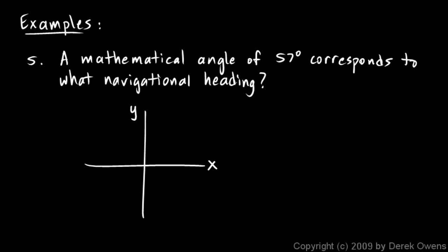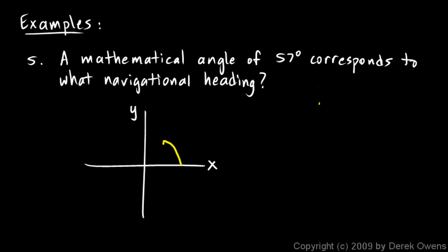We're continuing with some examples of converting between navigational headings and mathematical angles. In this set of examples, we're going to be given a mathematical angle and told to find the corresponding navigational heading. Remember that a navigational heading starts at north and specifies the angle as a direction clockwise from north, whereas the mathematician starts from the x-axis and specifies an angle as an amount of rotation counterclockwise from the x-axis.